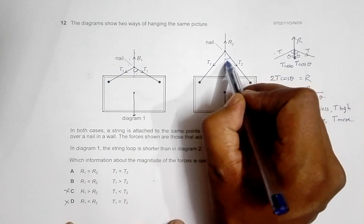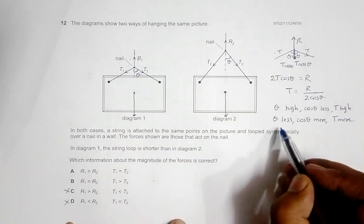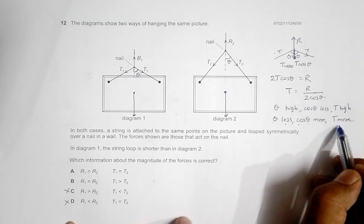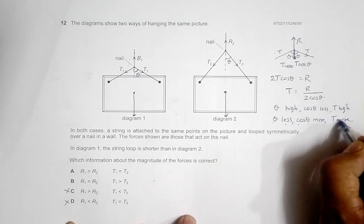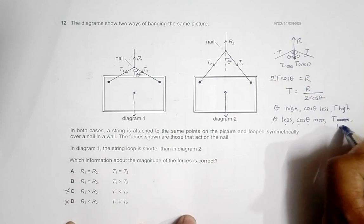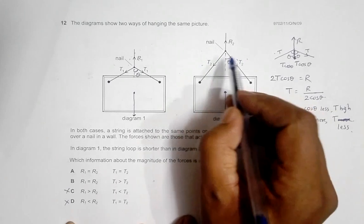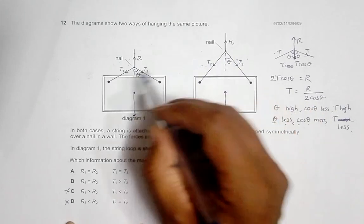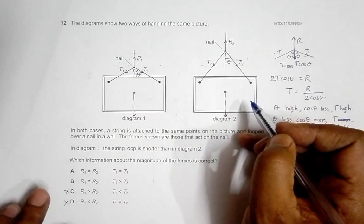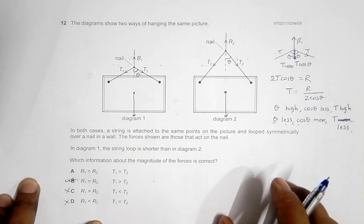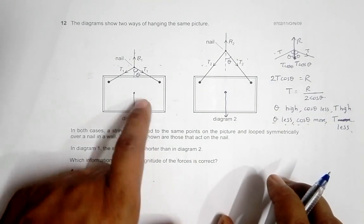Here this theta is less, so theta less means cos theta more and T should be less. So T2 should be less and T1 should be more. That means choice B should be correct: R1 equals R2 and T1 is more than T2.